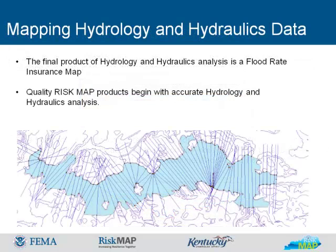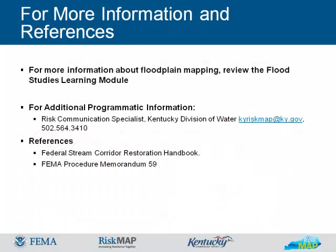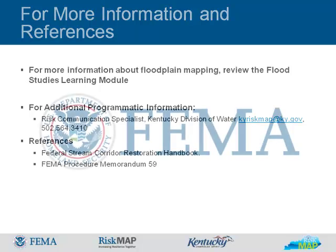The final product of hydrology and hydraulics analysis is a flood insurance rate map. The FIRM is the basis of the risk map program implementation. Citizens, insurance agencies, floodplain managers, and others will rely on the accuracy of the newly issued FIRMs to communicate risk and educate the public. FIRM production incorporates hydrology and hydraulics analysis to digitally model flooding events. Geographic information specialists use mapping software to incorporate engineering analysis with the best available terrain and imagery data sets. Layers of data are acquired, compiled, and mapped to FEMA specification. Quality risk map products begin with accurate hydrology and hydraulics analysis. This concludes our module on hydrology and hydraulics for non-engineers. For more information, please consult the sources shown.